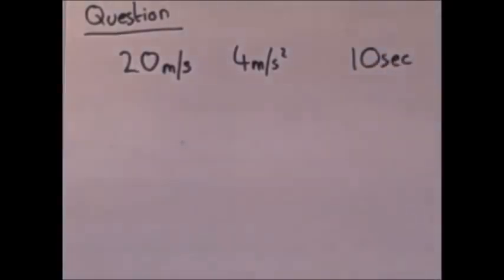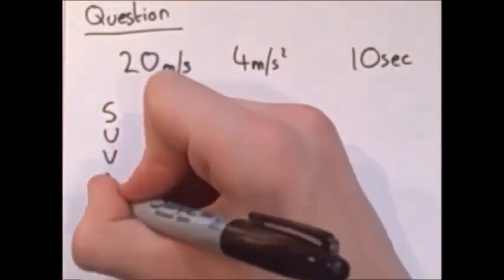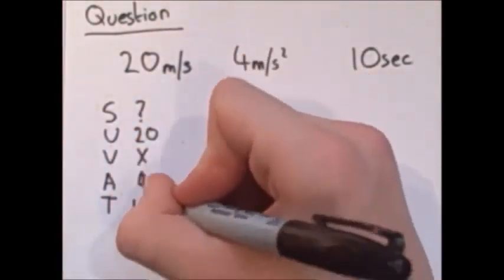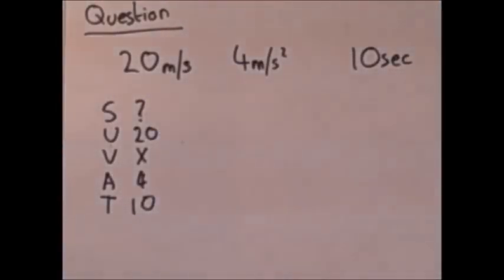Okay, let's try an example. A car going at 20 meters per second due east accelerates east at 4 meters per second squared for 10 seconds. How far does a car travel while accelerating? So what we know is U, A, and T, and we are looking for S.